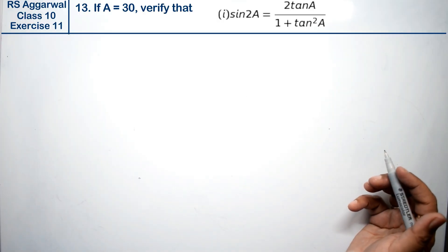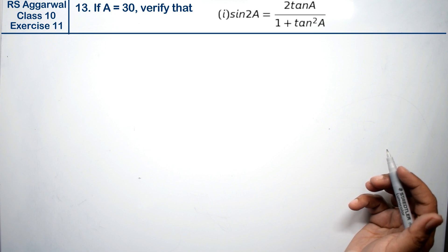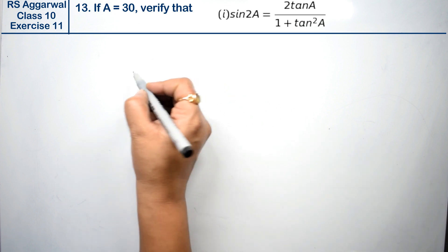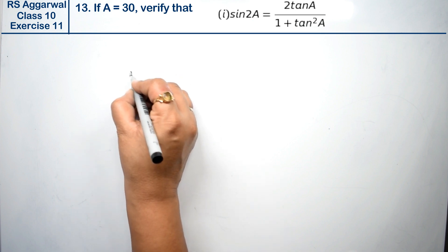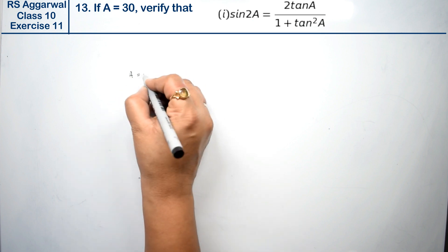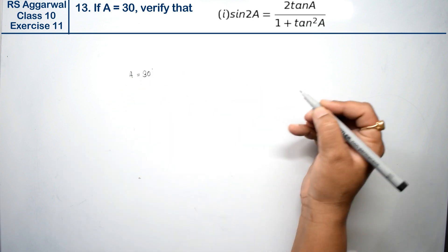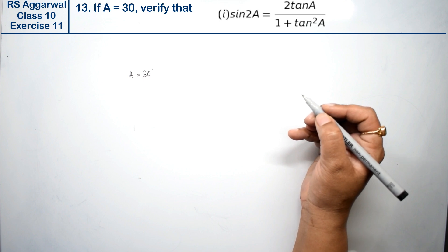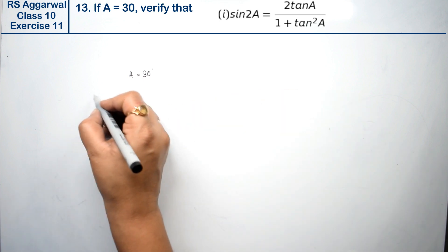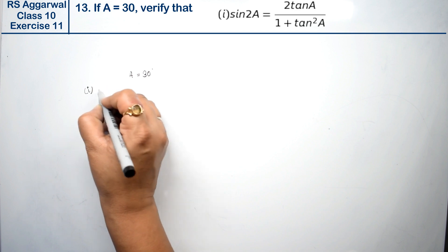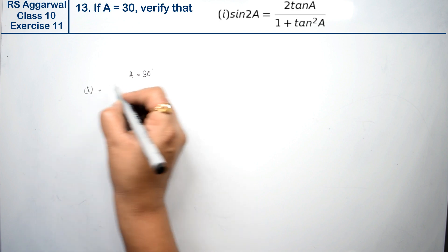Let's do question number 13 of Exercise 11, that is T-ratios of some particular angles. Question number 13: if A equals 30 degrees. We are given the value of A as 30 degrees. Now let's see what it asks us to verify — first part.